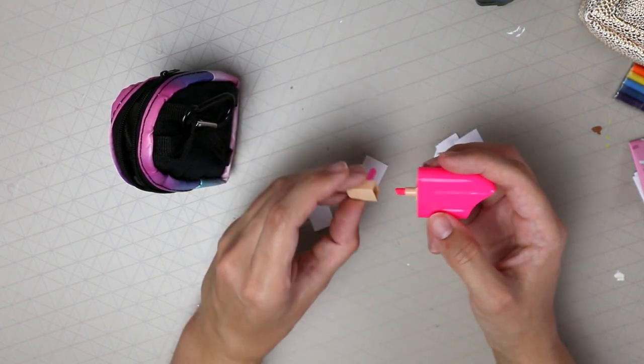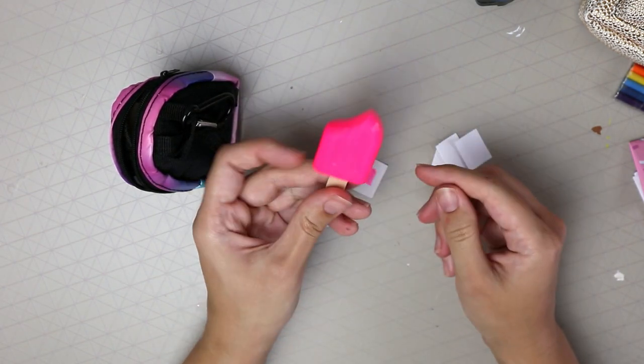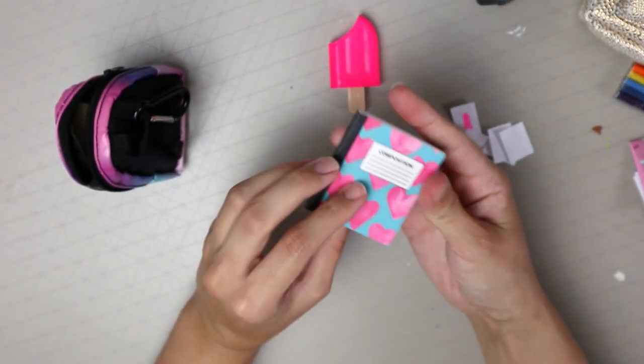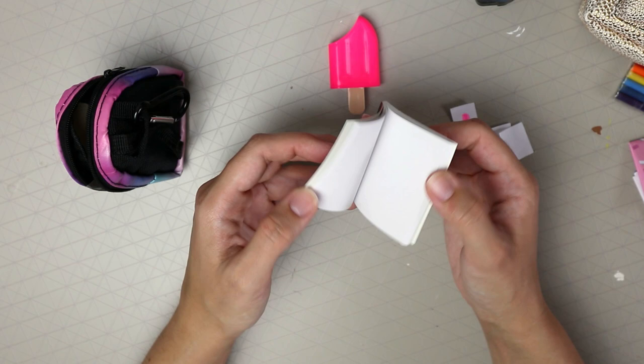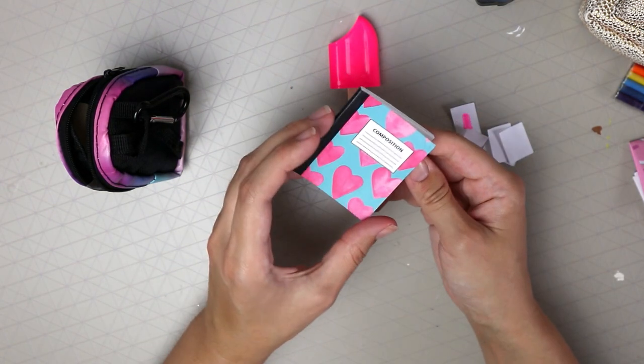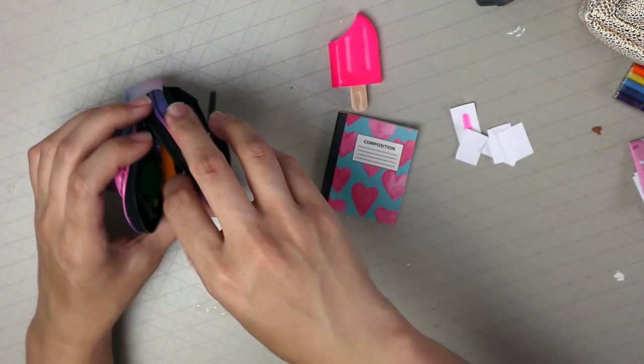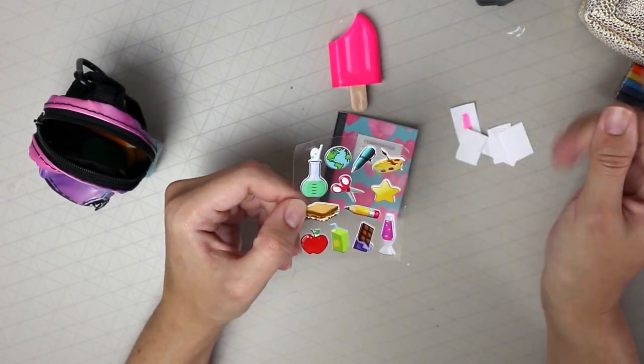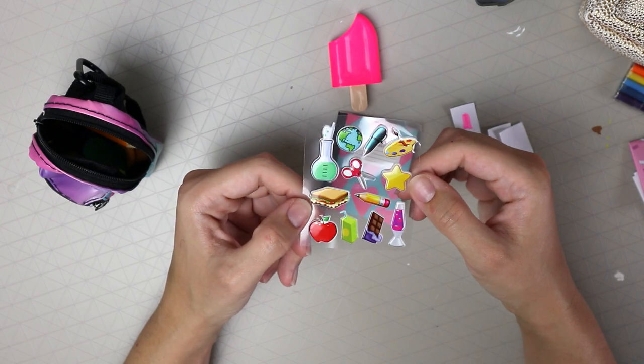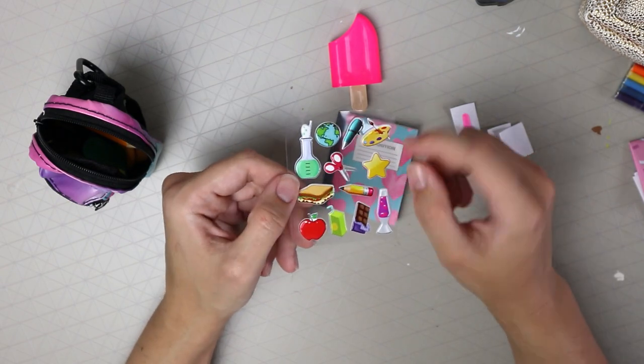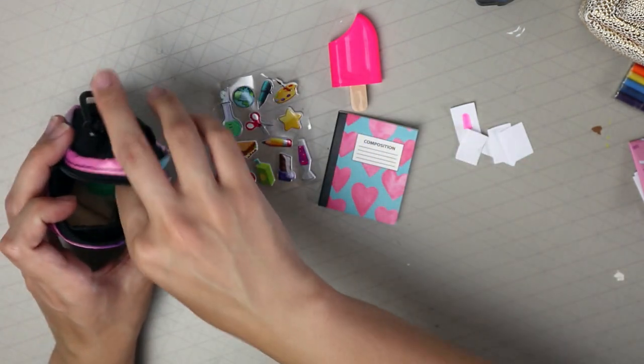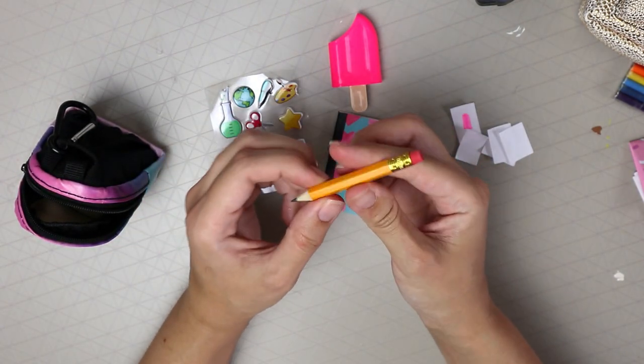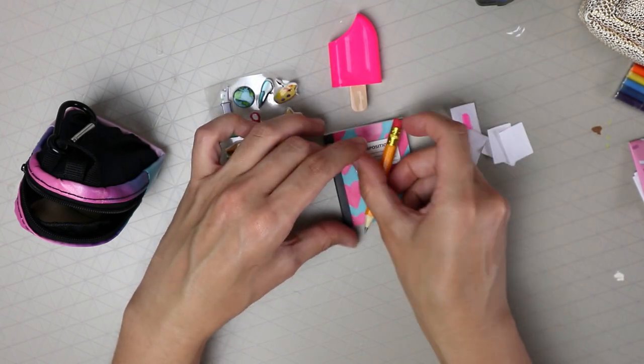Oh this is really cute, a miniature notebook. I really like that. Oh awesome, stickers. This is like a paint palette. Oh okay, technically I think you could make this out of a real pencil but that's still quite cool.